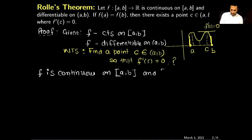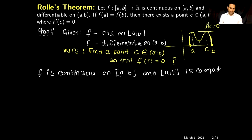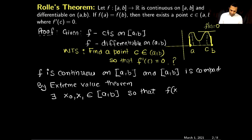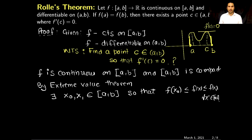The interval [a, b] is compact because it is a closed and bounded interval. Since f is a continuous function defined on a compact set, I can use the Extreme Value Theorem. By the Extreme Value Theorem, there exist x₀ and x₁ both belonging to the closed interval [a, b] such that f(x₀) ≤ f(x) ≤ f(x₁) for all x in [a, b]. In other words, x₀ and x₁ are the minimum and maximum of the function. Next, I'm going to divide the proof into two cases.